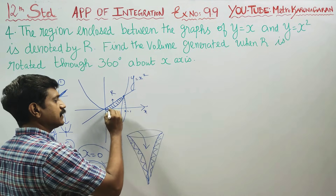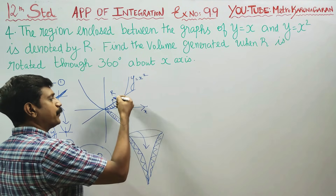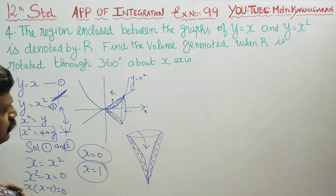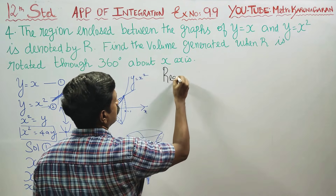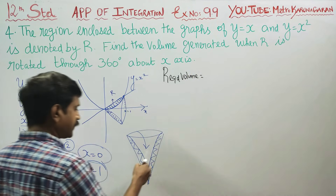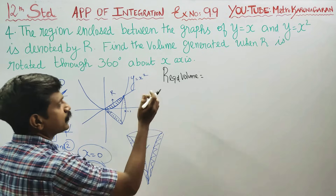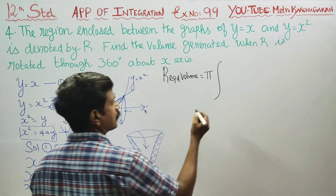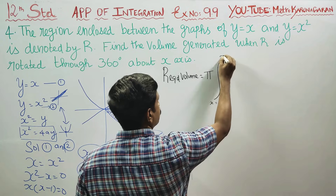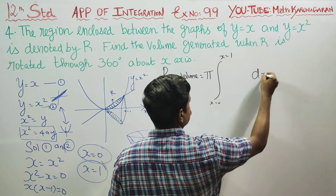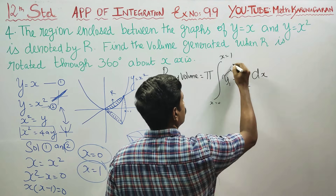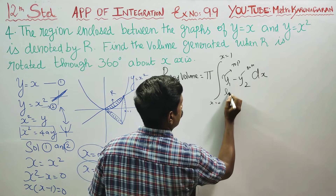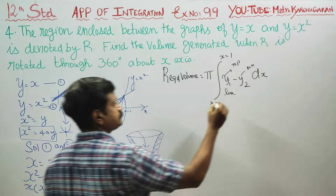The upper curve is the straight line y = x and the lower curve is the parabola. The required volume formula uses top minus bottom. The required volume equals π times the integral from x = 0 to x = 1 of (y₁² − y₂²) dx, where y₁ is the top curve (straight line) and y₂ is the bottom curve (parabola).